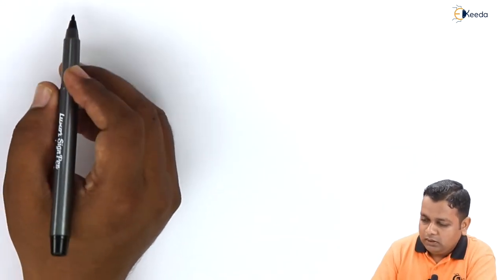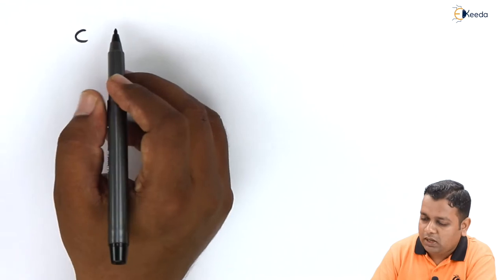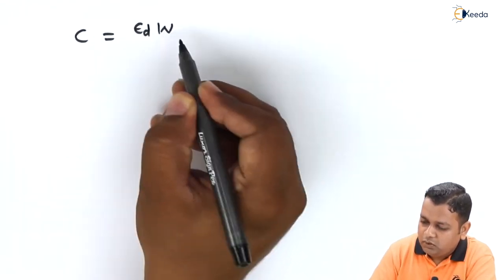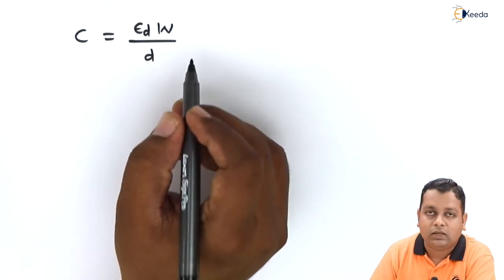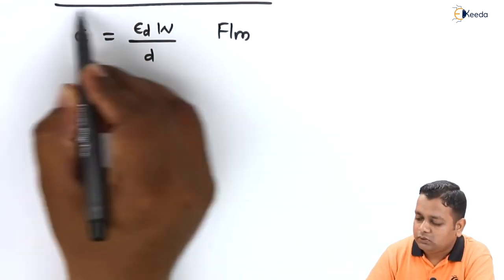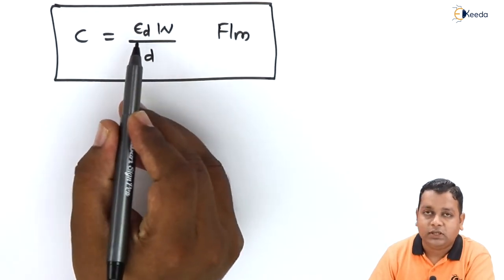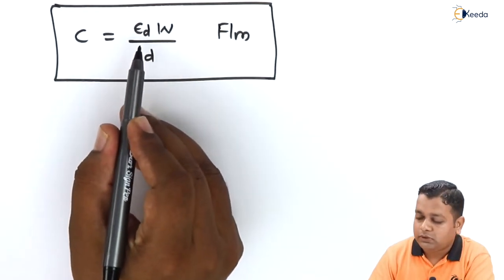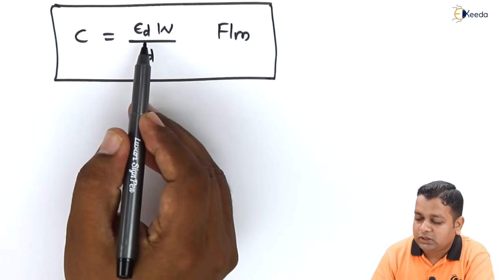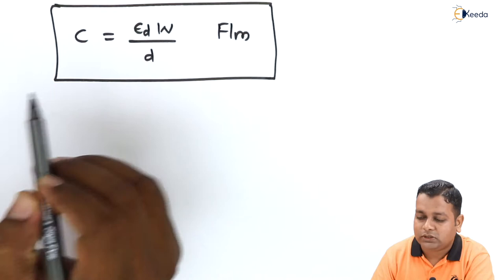Next, the capacitance between the two conductive strips is represented by capital C and expressed as: C = ε_D · W / d, measured in farads per meter. In this representation, the suffix D on epsilon indicates permittivity corresponding to the dielectric material, not the conductive material — hence epsilon suffix D.